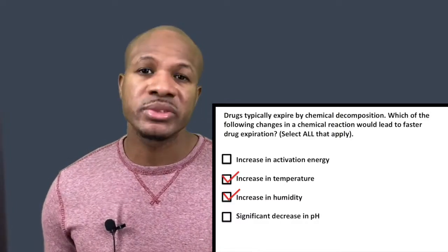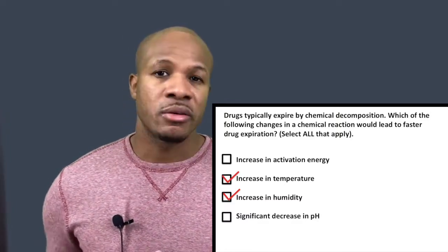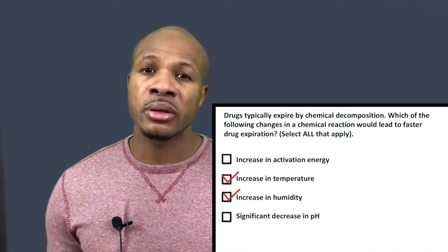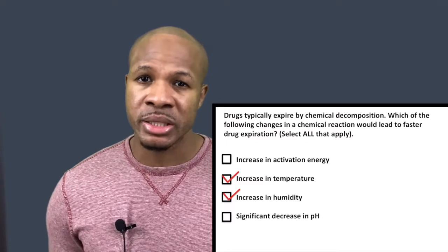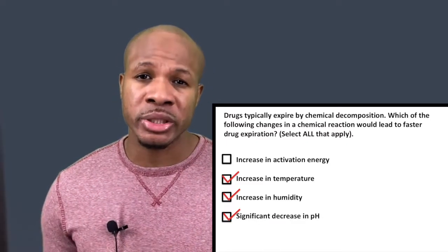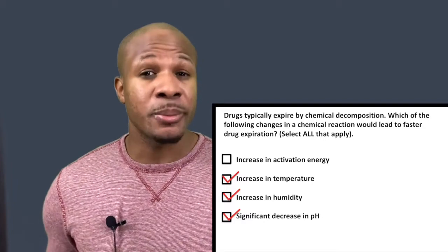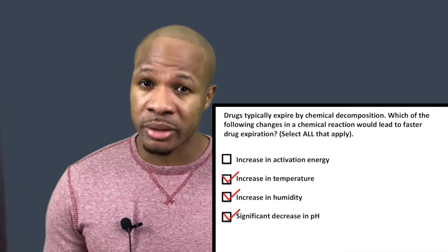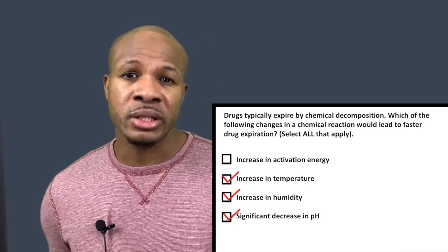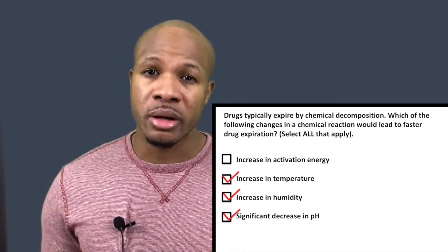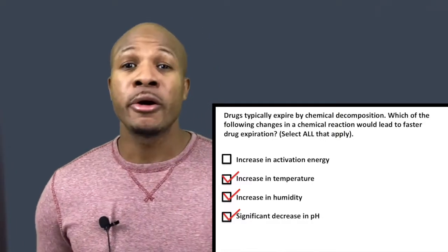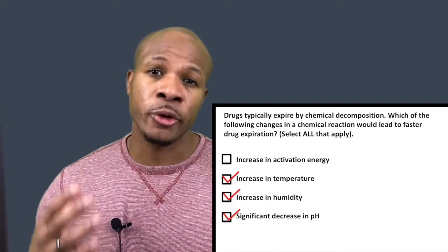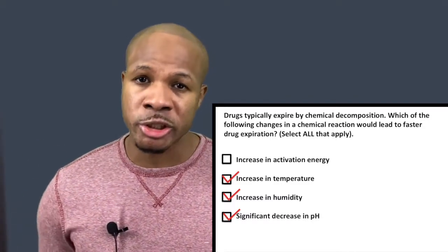D says: significant decrease in pH. Very extreme levels of pH, whether very high or very low, is going to catalyze chemical reactions. Very low pH means there's a higher concentration of protons, and a proton is a positively charged chemical — and charged chemicals are very reactive. So very low pH would definitely lead to a higher rate of drug decomposition and drug expiration. So the correct answers are all options except for increase in activation energy.